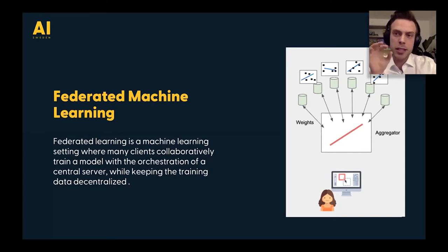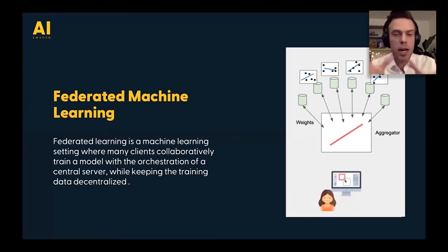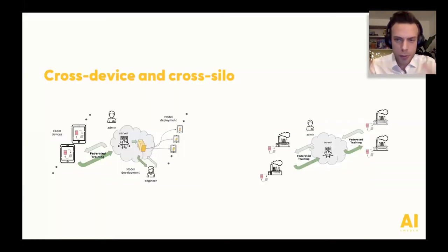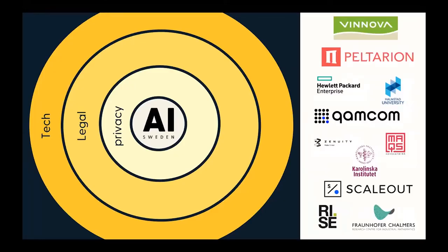Instead of sharing your data, you send the model to your node or client and train locally on that node. The nodes can be either an edge device like a phone or car, or a server. Then you aggregate the weights of the models into one main model. There are two main categories called cross-device and cross-silo. Cross-device is especially relevant since we're talking about edge today. At AI Sweden, we're building what's called a virtual test bed — a project running from August this year until end of March — together with partners. We're looking into four different POCs with various frameworks tested on different data sets and models.